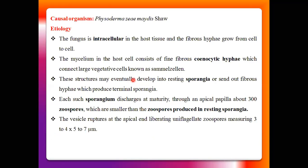The causal organism is Physoderma maydis. This fungus mainly infects the maize plant and develops such symptoms. This fungus is intracellular in the host tissue — the mycelium grows within the host cell, so it is known as intracellular mycelium. This mycelia is always coenocytic (no cross wall is present within the mycelium).